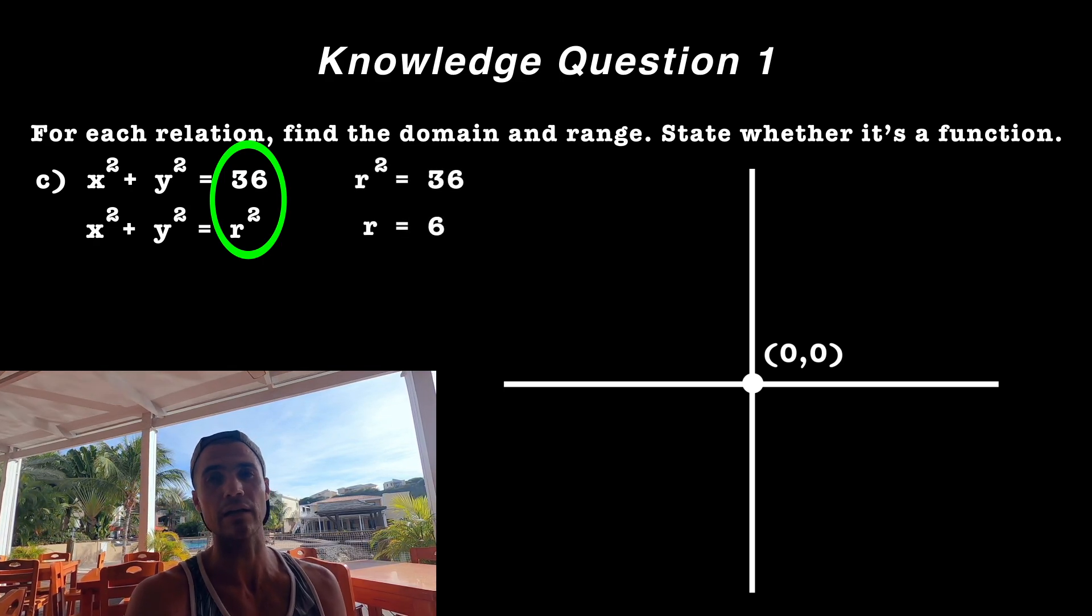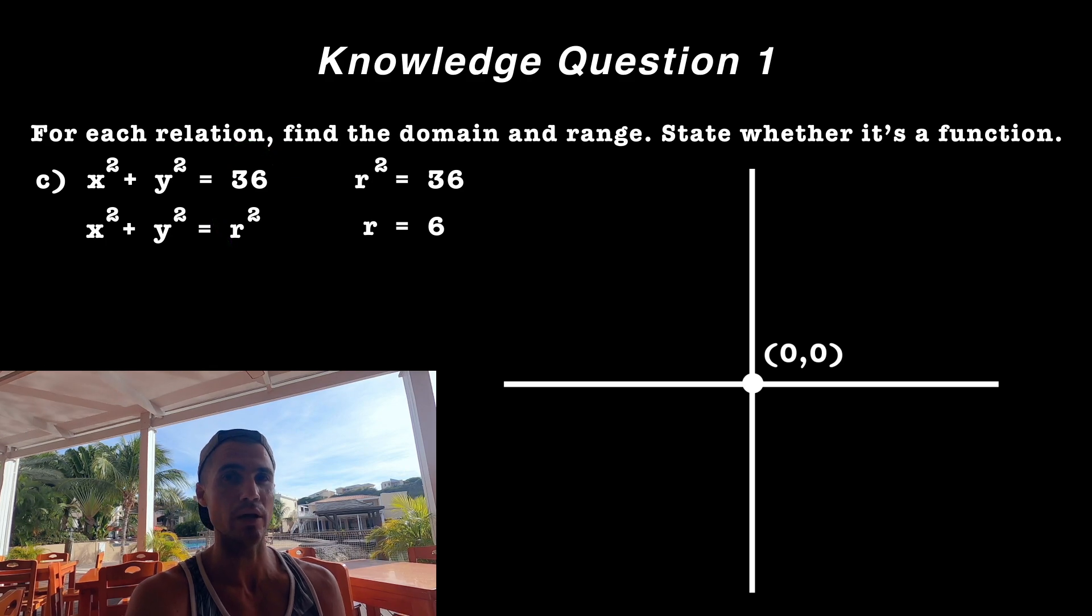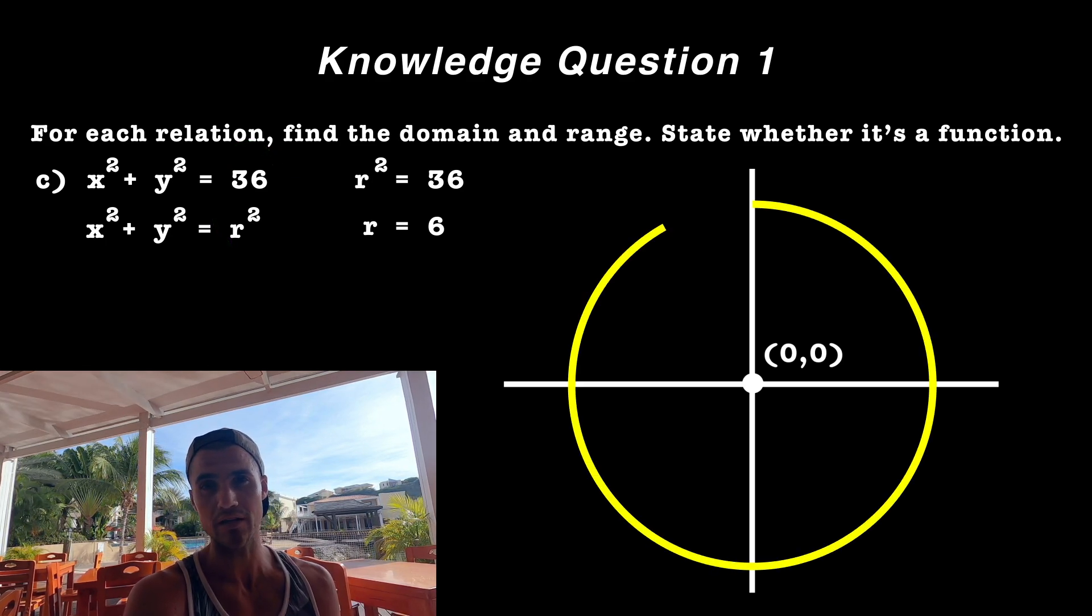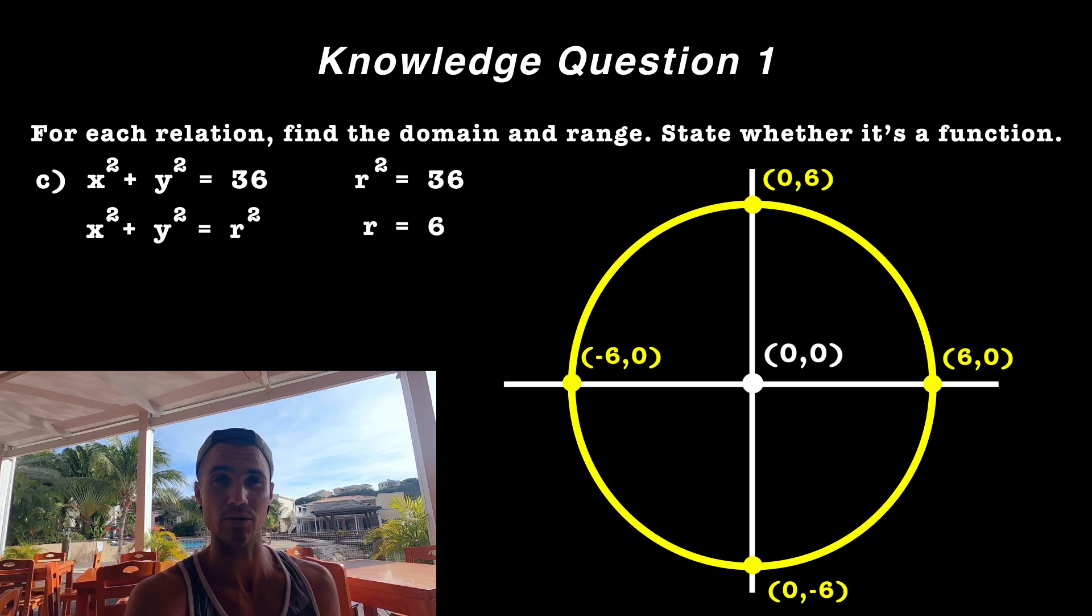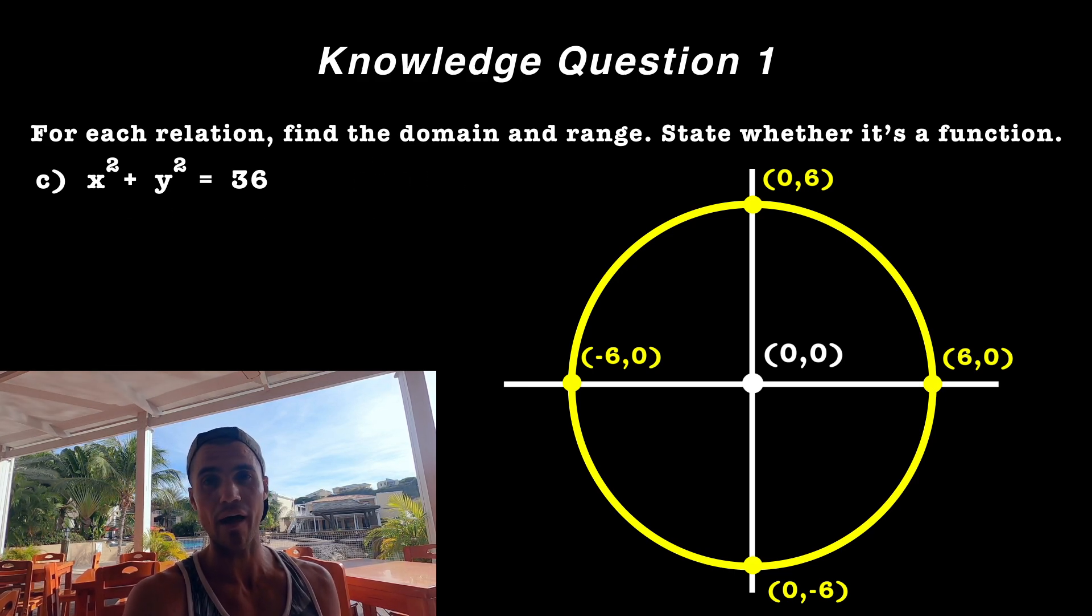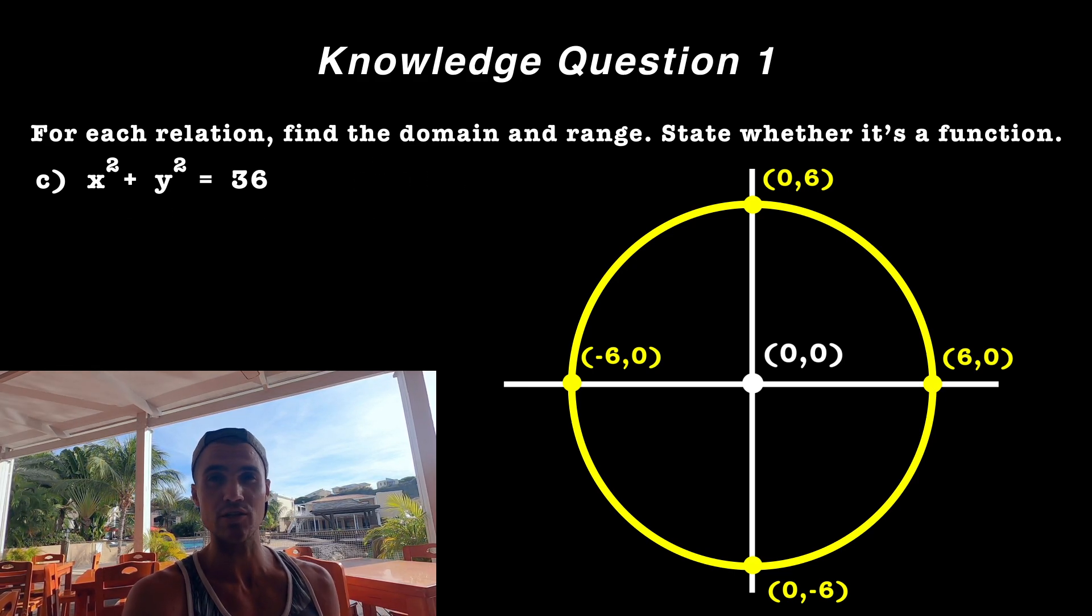And so when we draw a circle with a radius of six that's centered at zero and zero, we end up with a diagram like that. And so from here, what's the domain going to be?